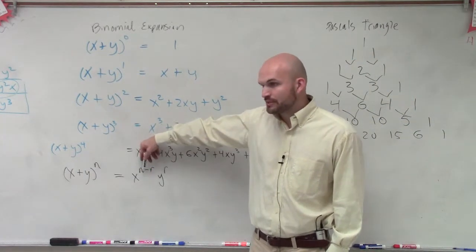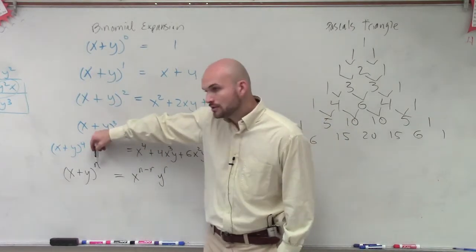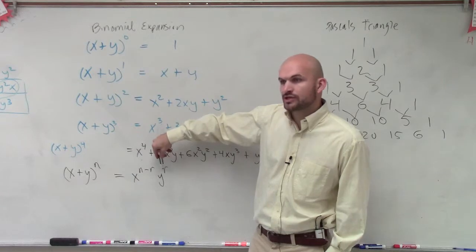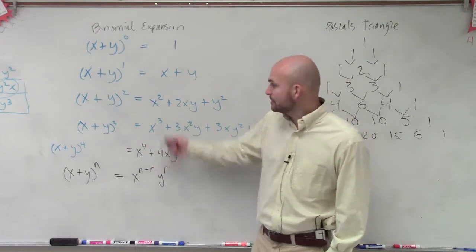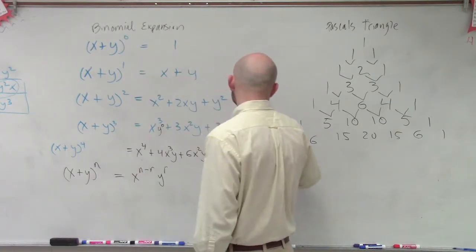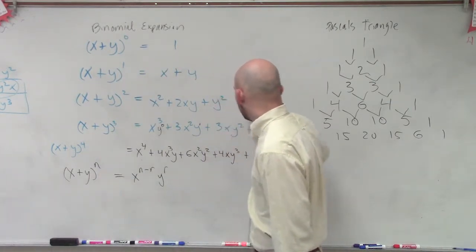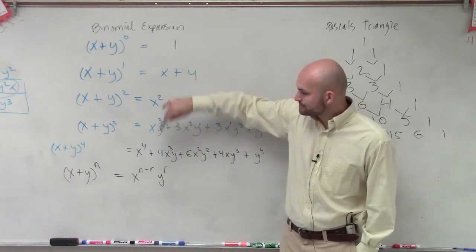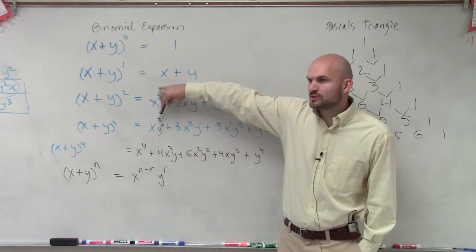where n is going to be my degree of my expansion, and then minus my r, which will be the degree of the other one. And remember, when we look at this, does that make sense? Could I write this as y to the 0, and this is x to the 0? Then this would be 1, and that would be x to the 1. So think about it. For this first term, what's my r?